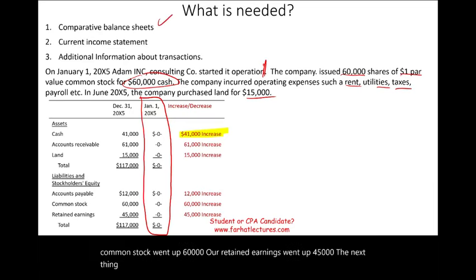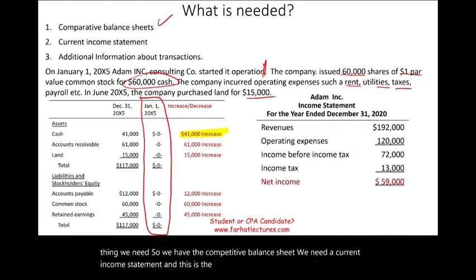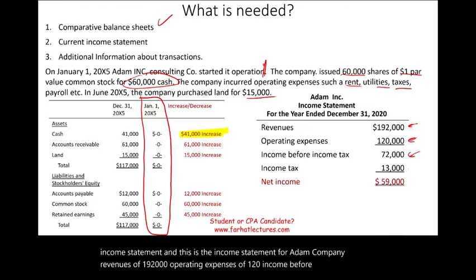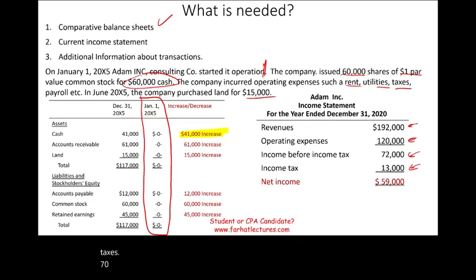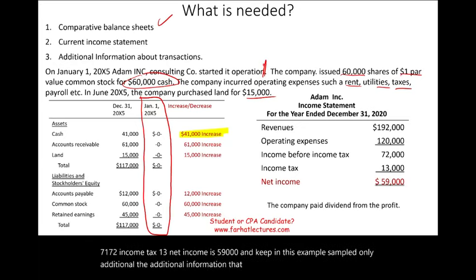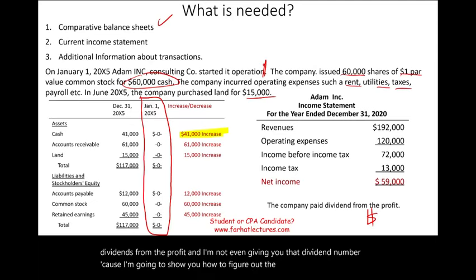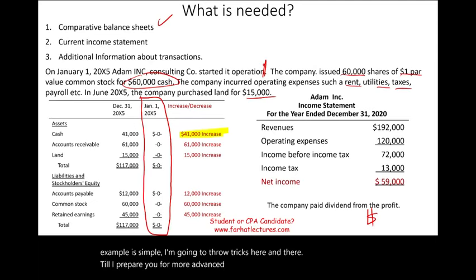We need the current income statement. For Adam Company: revenues of $192,000, operating expenses of $120,000, income before taxes of $72,000, income tax of $13,000, and net income of $59,000. The additional information given is that the company paid a dividend from its profit — I'm not giving you that dividend number because I'm going to show you how to figure it out.